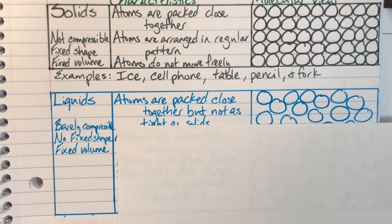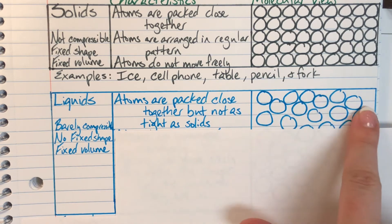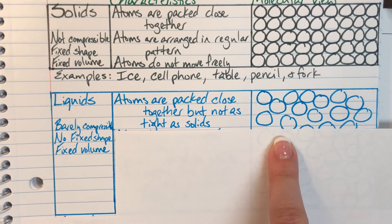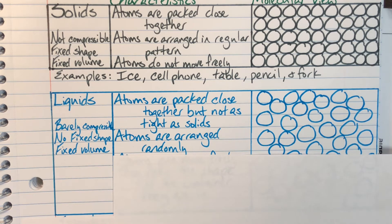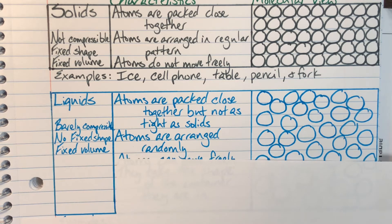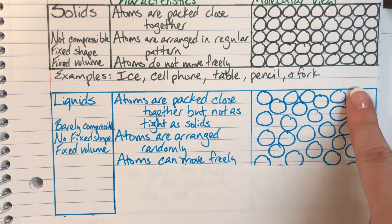Some more expanded characteristics about liquids: atoms are packed in pretty close together but not as tightly as solids. So you can see some space around my circles that are representing my atoms here. My atoms are going to be arranged randomly. We don't have a pattern here. They're going to be in whatever arrangement that they like to be at that particular instance. My atoms can move freely because I do have some space in between the atoms so they can slip and slide past each other.